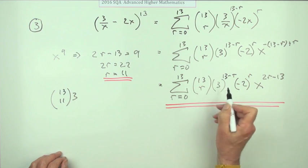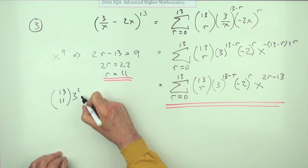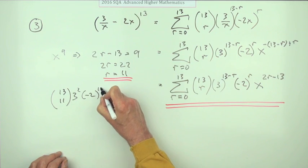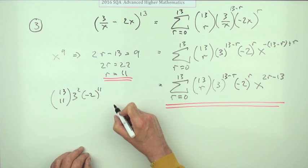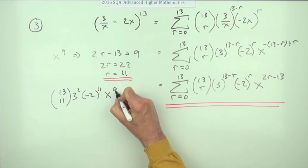So popping that in means the term required will be 13 choose 11, 3 to the power 13 minus 11 which is 2, negative 2 to the power 11 (they'd add up to 13), and of course x to the power 9.